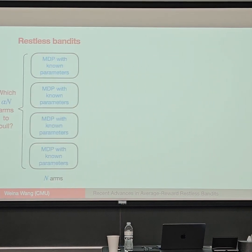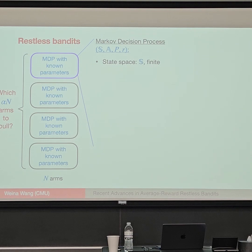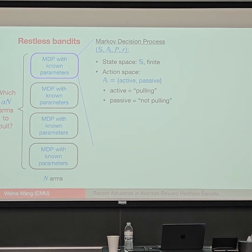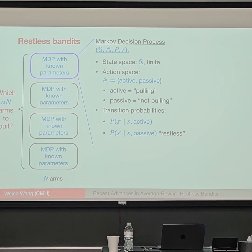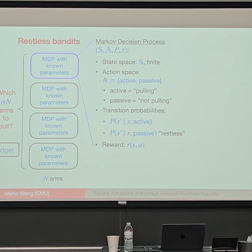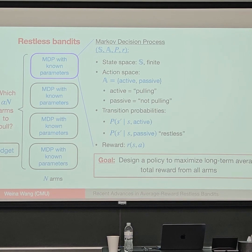Each arm is an MDP with a finite state space and two actions: active (pull it) or passive (don't pull it), with different transition probabilities under each. Because it can also transition even if you don't pull it, it's called the restless bandit. For every state-action pair you collect a reward, and you want to maximize the total reward. The budget alpha constrains how many arms you can pull each time step. All parameters are known and all states are observable — there's no learning involved.